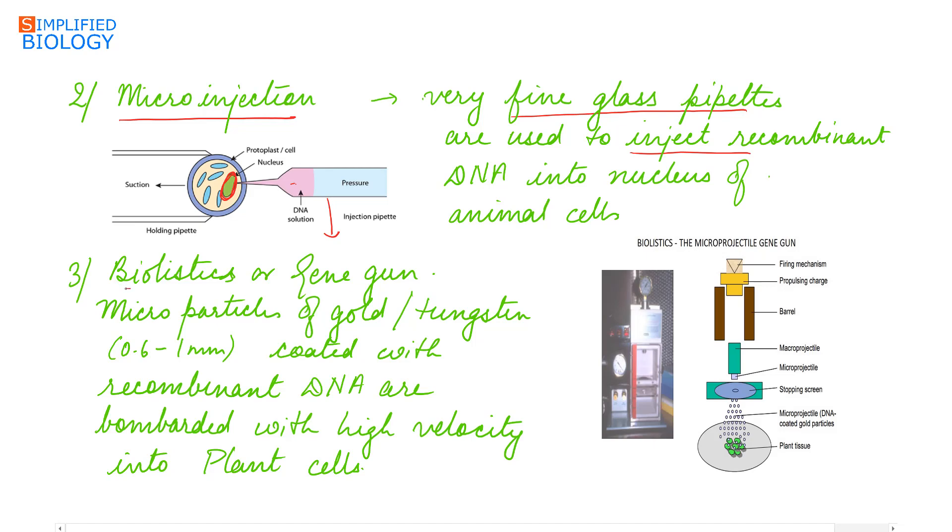Third, biolistics or gene guns. Biolistic is a short form of biological ballistics. Micro particles or you can say pellets made up of gold or tungsten of about 0.6 to 1 millimeter in size.